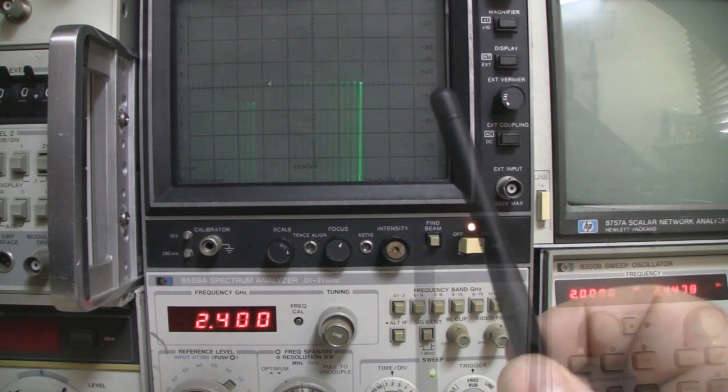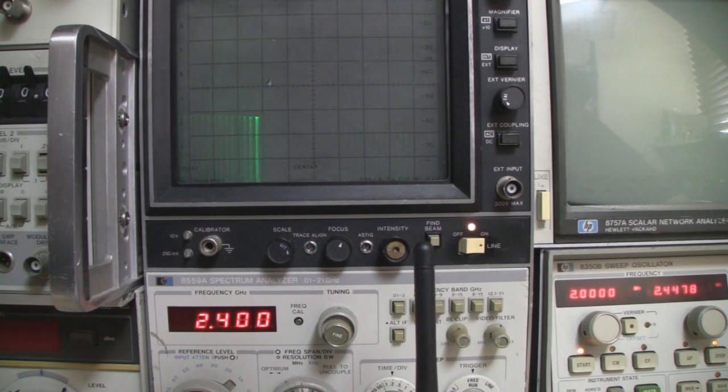The first one then is a good one. We're getting low reflections and we're getting a really good frequency response. And the second one is also a good one, again low reflections and a good frequency response.